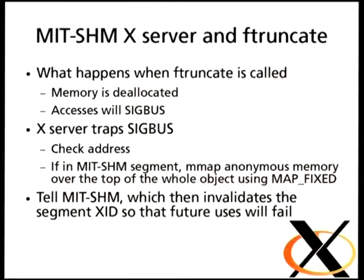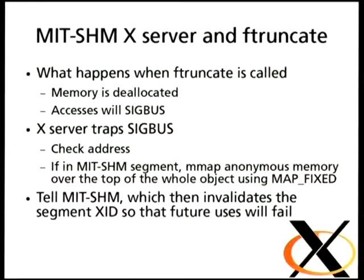Now you have passed the file descriptor to the X server and you share a file descriptor to the same piece of shared memory. What happens when the application calls ftruncate on the file? All those pages — whoof — they're gone, and every access to that address space will now generate a SIGBUS. So now the X server traps the SIGBUS, checks where the address was that generated it, has a little linked list to these shared memory blocks, invalidates that one, mmaps some new memory on top of that so it can return from the signal handler and keep going, and invalidates that XID so the next time the user tries to use that shared memory block they get errors back.